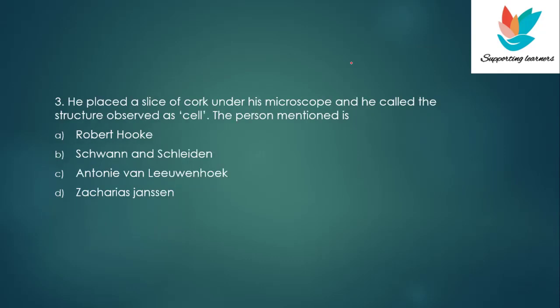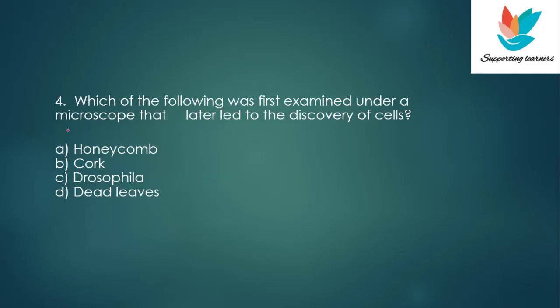Question 3: He placed a slice of cork under his microscope and called the structure observed as 'cell' — the person mentioned is? The answer is Robert Hooke. Question 4: Which of the following was first examined under a microscope that later led to the discovery of cells? A. Honeycomb, B. Cork, C. Drosophila, D. Dead leaves. The answer is cork. A thin slice of cork was observed — it looked like a honeycomb, but it was not the honeycomb that was observed; the structure observed was the cork.